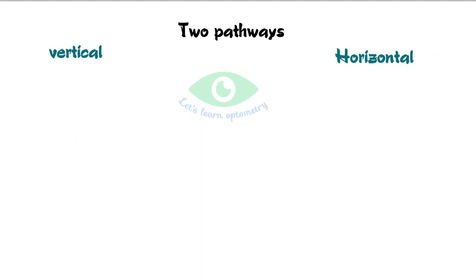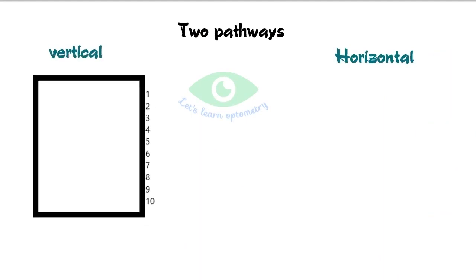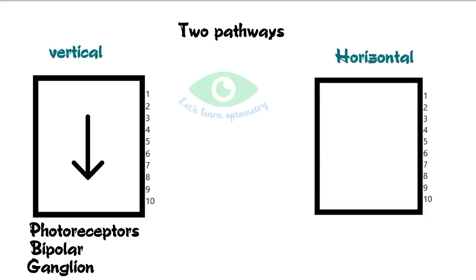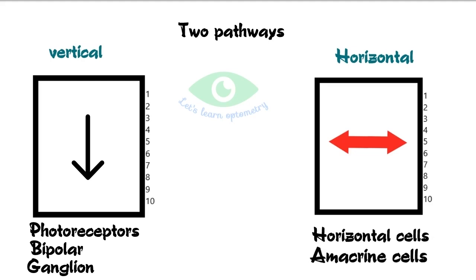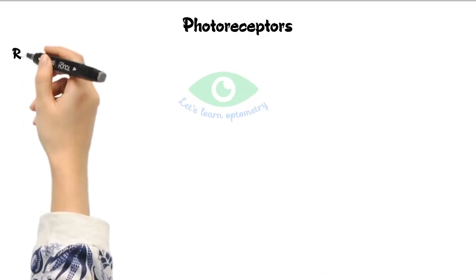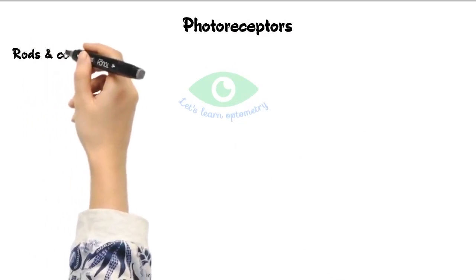There are two pathways within the retina: vertical and horizontal. In the vertical pathway, nerve impulses travel away from the eye to the visual cortex; photoreceptors, bipolar cells, and ganglion cells are involved. In the horizontal pathway, cells conduct impulses from one area of the retina to another, modifying and integrating the signals. Amacrine and horizontal cells are involved in the horizontal pathway.